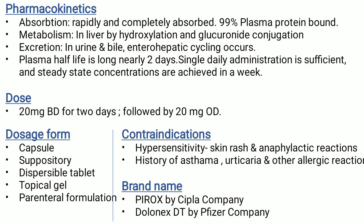Pharmacokinetics of piroxicam: it is rapidly and completely absorbed. It is 99% plasma protein bound. Metabolism in liver by hydroxylation and glucuronic conjugation. Excretion in urine and bile — enterohepatic cycling occurs. Plasma half-life is long, nearly 2 days. Single daily administration is sufficient, and steady-state concentrations are achieved in a week. Dosage form: available in capsule, suppository, dispersible tablet, topical gel, and parenteral formulations.